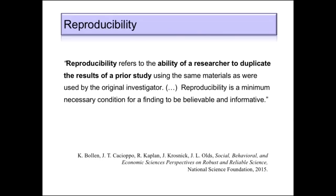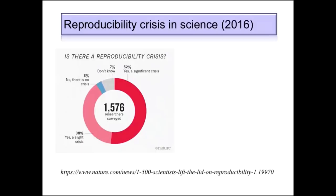Digging into the question a little bit further, it's useful to actually think about what we mean by reproducibility in research. I went digging for various notions of reproducibility in science more broadly than in machine learning, and found this one proposed by the NSF in 2015: reproducibility refers to the ability of a researcher to duplicate the results of a prior study using the same materials as were used by the original investigator. Reproducibility is a minimum necessary condition for a finding to be believable and informative.